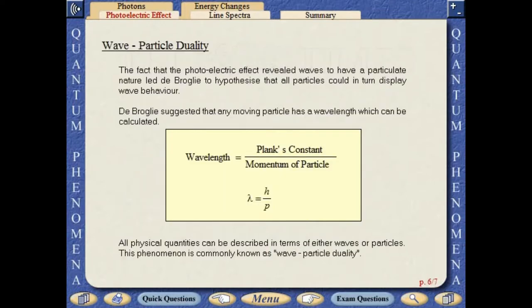The fact that the photoelectric effect revealed waves to have a particulate nature led de Broglie to hypothesize that all particles could in turn display wave behavior. De Broglie suggested that any moving particle has a wavelength which can be calculated. All physical quantities can be described in terms of either waves or particles. This phenomenon is commonly known as wave-particle duality.